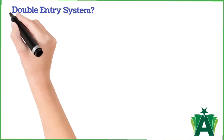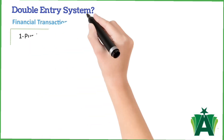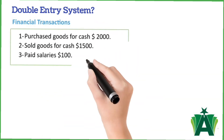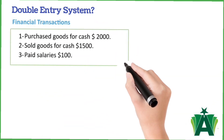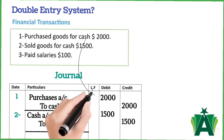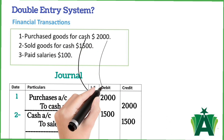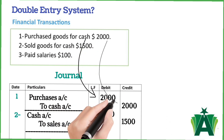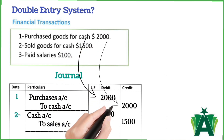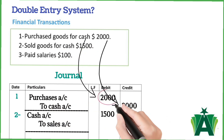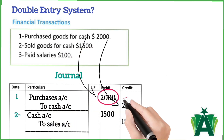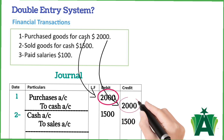The double entry system is a method of recording financial transactions that ensures every transaction is recorded twice — once to debit an account, and once to credit another account.